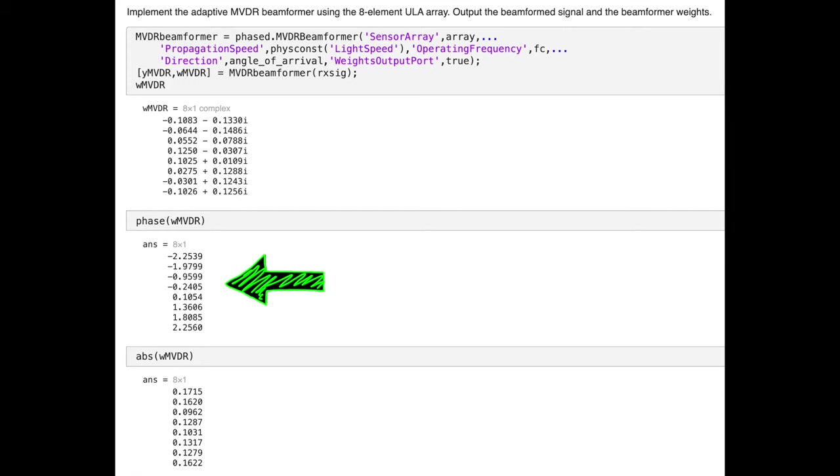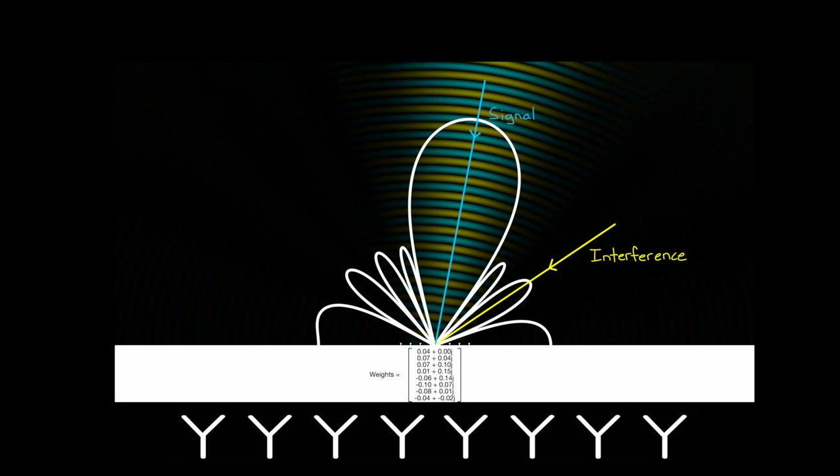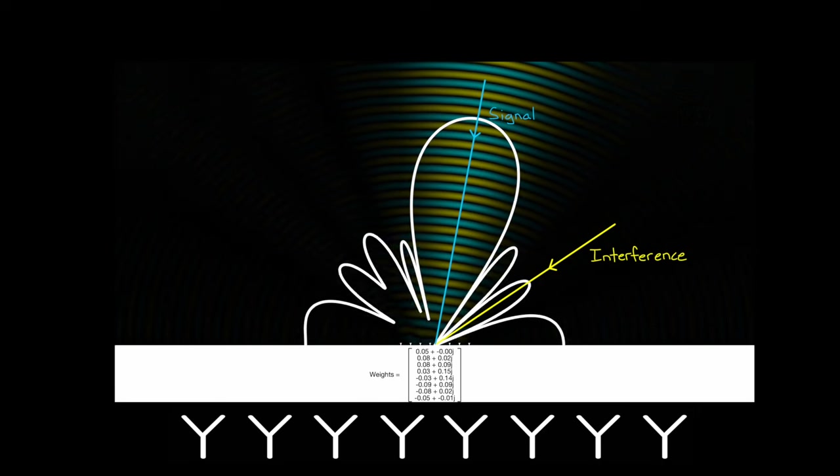And this is the resulting weight matrix, which, by the way, corresponds to these phases and these gains for each of the eight elements. And now, if I go back to our array pattern and put that weight matrix in, we can see the result.